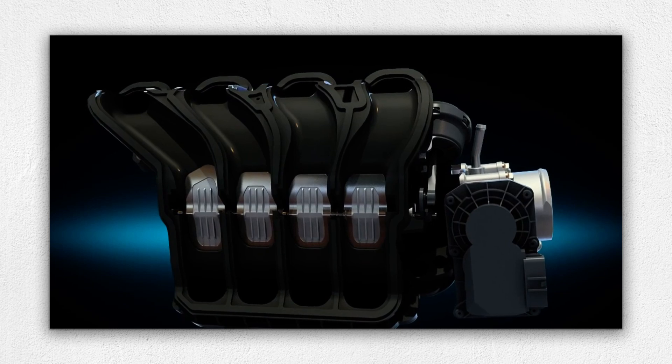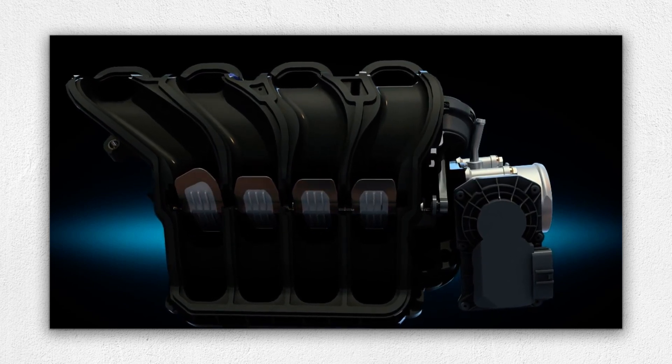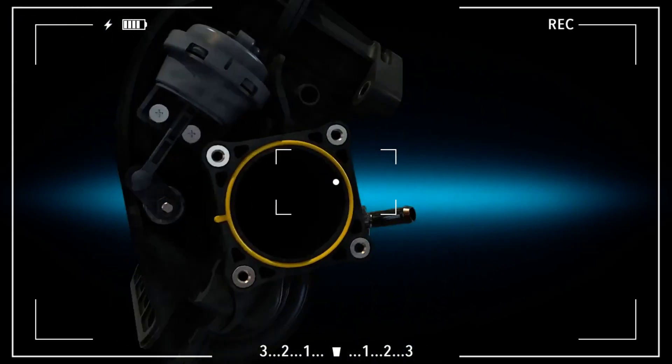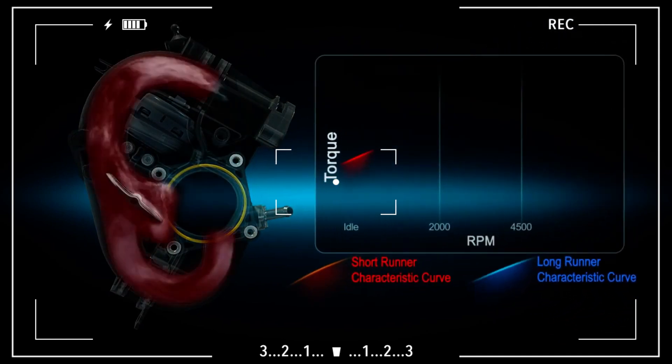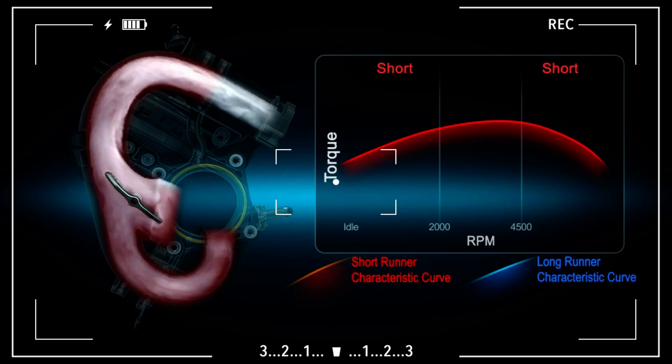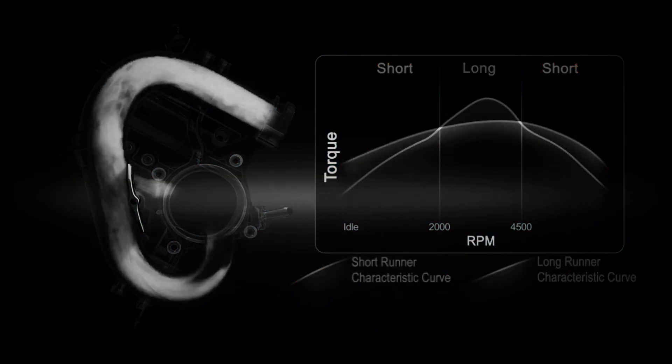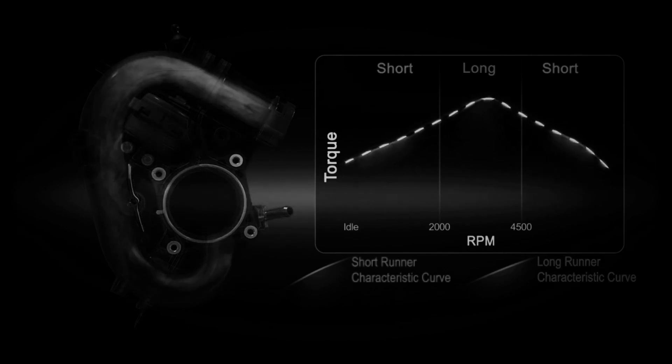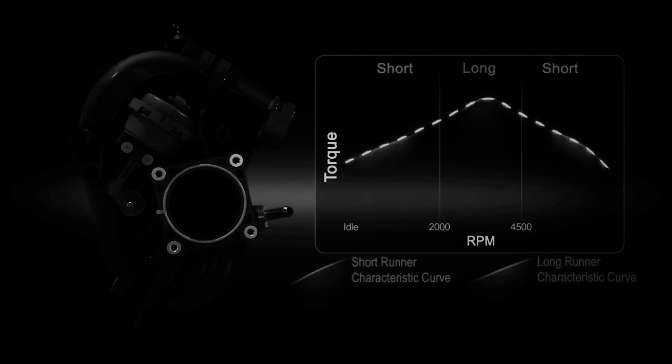VIS variable intake system switches runner length while VCM variable charge motion tumbles air at low RPM for improved torque. Both rely on plastic flaps that can stick from carbon build-up. A shredded VIS actuator often throws a code and saps mid-range punch until cleaned or replaced.